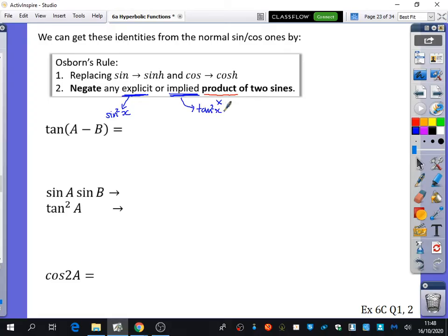even though it doesn't look like it's got two sines being multiplied together, we know that tan squared is actually sine squared x over cos squared x. So there is a sine that's being multiplied by itself within there, which will mean it needs to be negated.